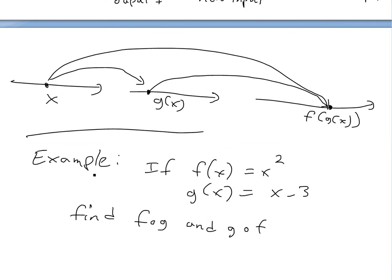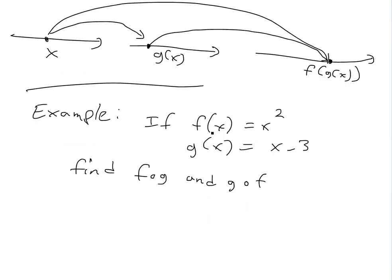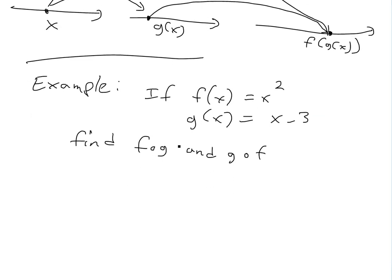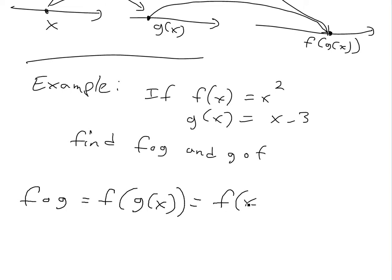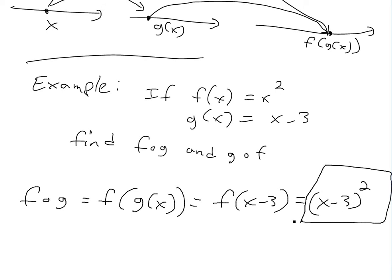The best way to illustrate composition is with an example. If f of x equals x squared and g of x equals x minus 3, find f circle g and g circle f. For f circle g, this equals f of g of x, and since g of x equals x minus 3, we get f of x minus 3. Replacing x with x minus 3 in f gives us x minus 3 squared — that's our answer.